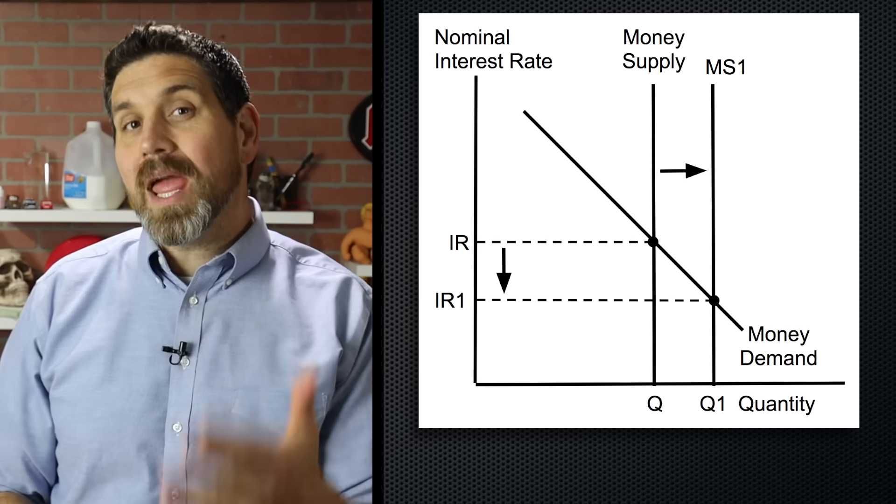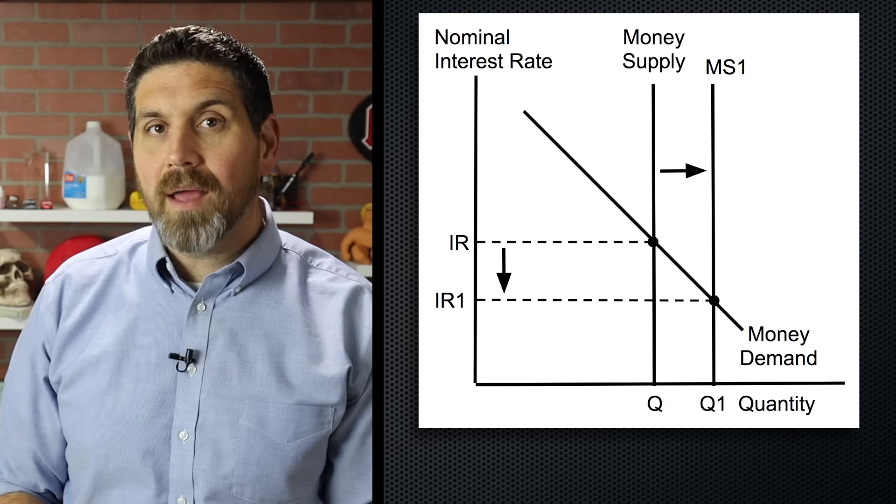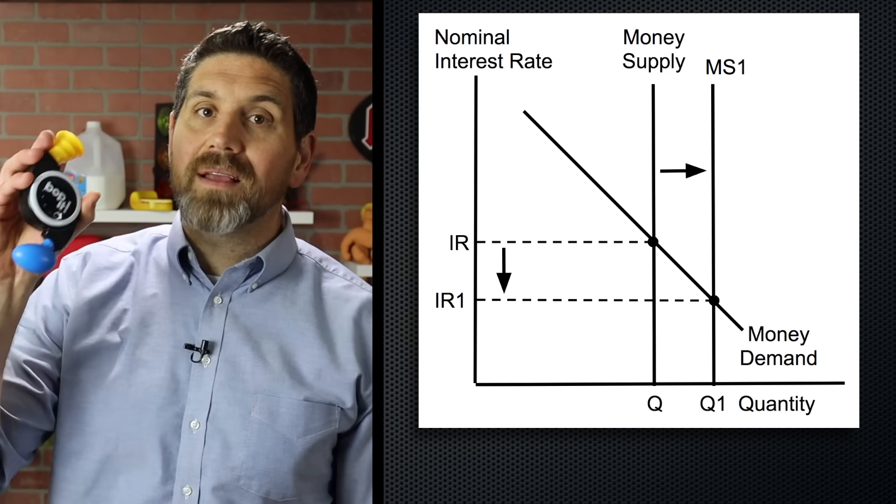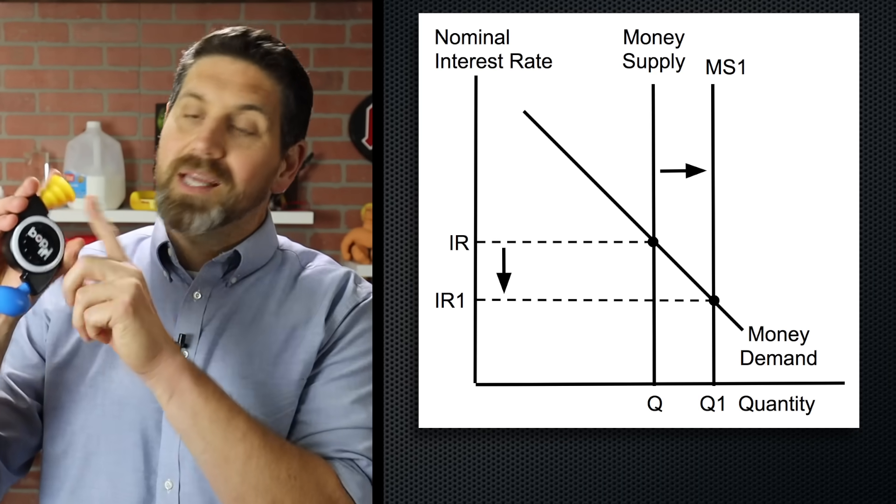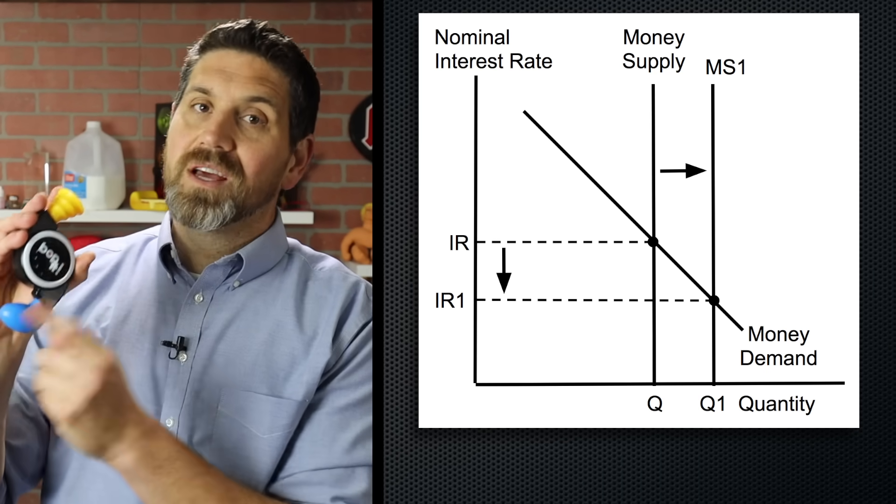So how does the central bank change the money supply? Well, there's three ways. They could twist it, pull it, or bop it. Stay with me, it's gonna make sense.